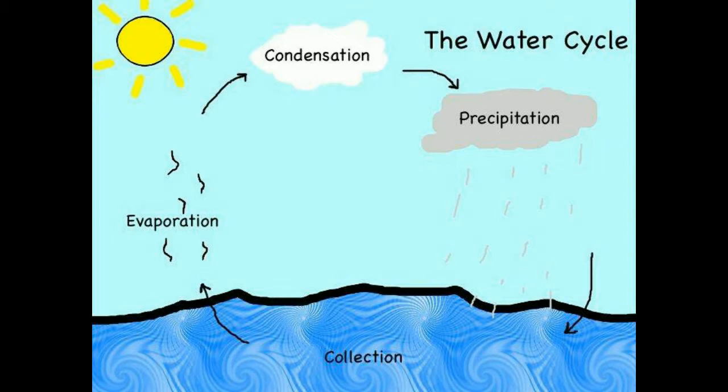This is because the water cycle, also known as the hydrologic cycle, keeps the water going around and around. This has occurred since oceans formed on Earth about 3.8 billion years ago.